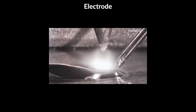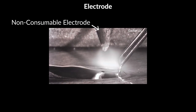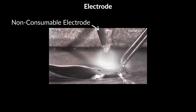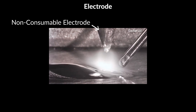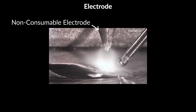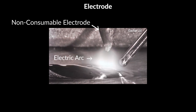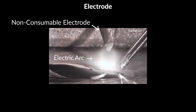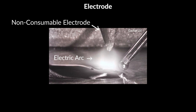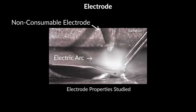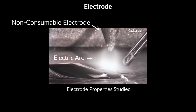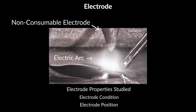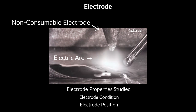3. Electrode. In GTAW and PAW, a non-consumable tungsten electrode is placed in the middle of the welding torch. The electric or plasma arc forms between the electrode and the workpiece. The properties of the electrode that can be visualized and studied include the condition of the electrode and its position in relation to the workpiece.